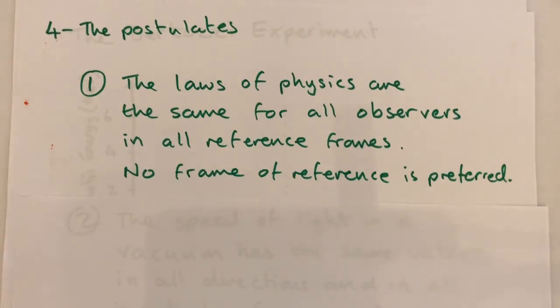Galileo assumed that the laws of mechanics were the same in all inertial reference frames. In fact, Newton's first law of motion is born from this very assumption. Einstein extended that idea to include all the laws of physics, especially those of electromagnetism and optics.